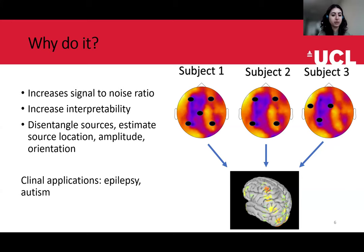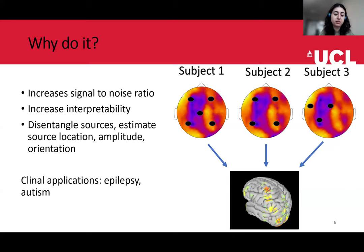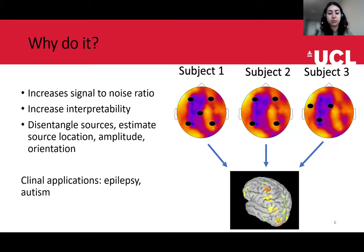There are also many clinical applications where source localization is useful. It's most common in the context of epilepsy, where you're interested in finding the source of epileptic seizures to resect them during surgery. But there are other clinical applications in autism, sleep disorders, and localizing brain tumors. So there's a range of clinical applications available, and of course in scientific and cognitive neuroscience it's quite popular to do source localization to test different hypotheses.